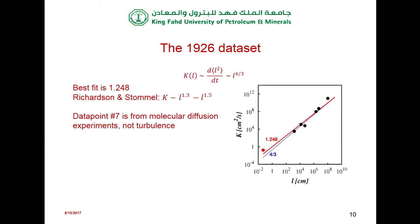I've revisited this whole idea recently. For a long time, I think everybody thought the four-thirds that Richardson drew was actually a best fit. In fact, it's not a best fit — it's just a guess. The best fit, if you do all seven points, is actually 1.248, which is the red line. Richardson and Stommel later did note that you could really have any power between 1.3 and 1.5, with a lot of error associated with it since the data points are from different sources.